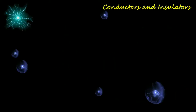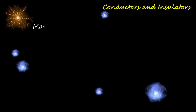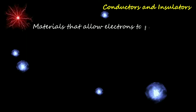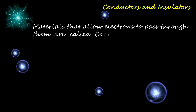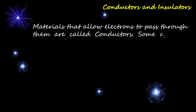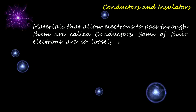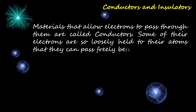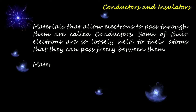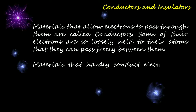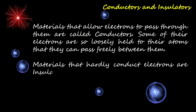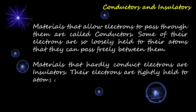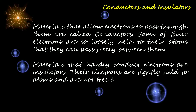Materials that allow electrons to pass through them are called conductors. Some of their electrons are so loosely held to their atoms that they can pass freely between them. Materials that hardly conduct electrons are insulators — their electrons are tightly held to atoms and are not free to move.